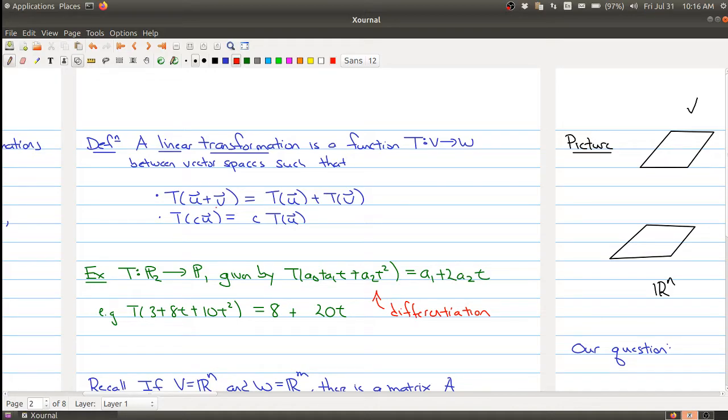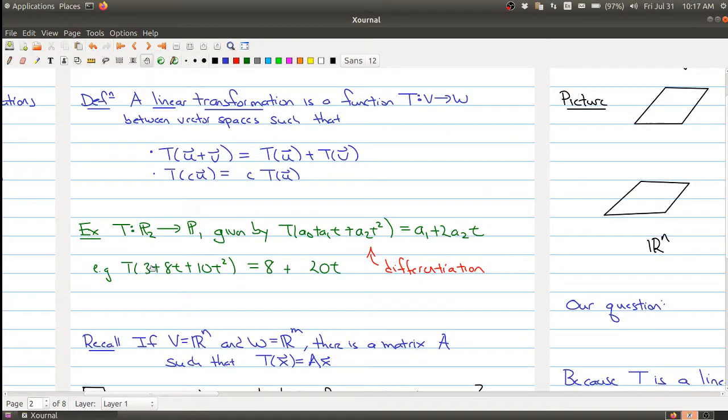And this actually happens to be a linear transformation. You could add two polynomials and then take its derivative, or you could take the derivative of the two polynomials and then add them, and the same thing with scalar multiplication. So we're thinking about a calculus function here, and our map is given by differentiation, which happens to be a linear transformation.